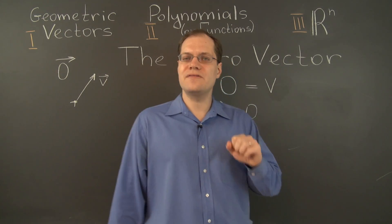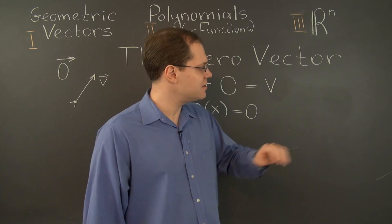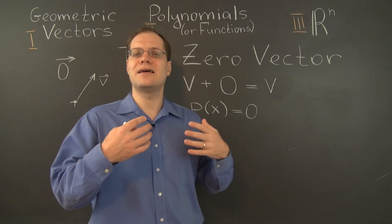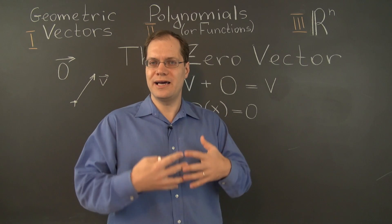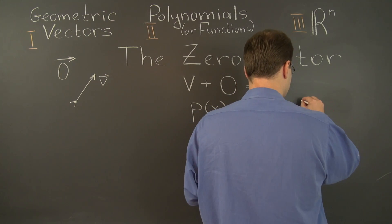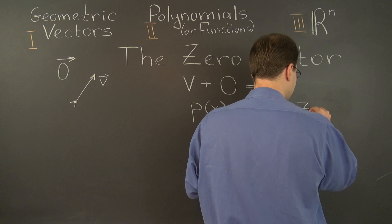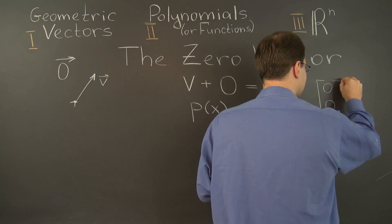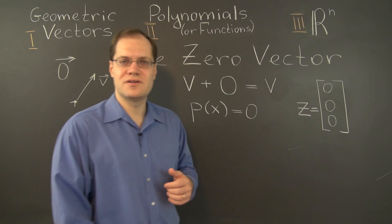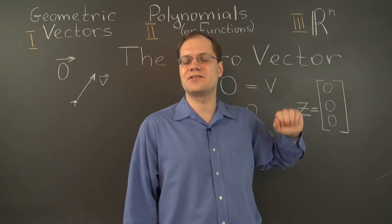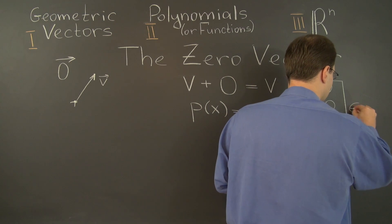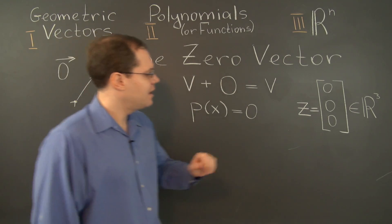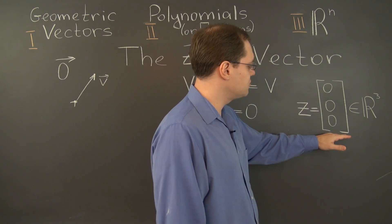What about in R^n? What vector plays the role of the zero vector in R^n? You must remember the definition of addition, and it happens entry by entry. So of course it is this vector. This time I'll call it the vector z, and I'll give you an example from R³. Of course it's the vector consisting of the three zeros. If you add this vector to any other vector from R³, that vector will remain unchanged.